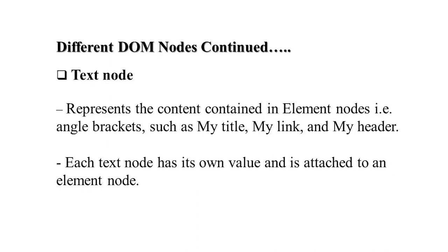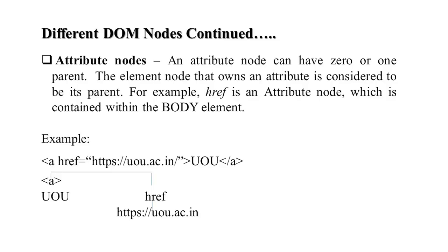Text nodes represent the content contained in an element node enclosed in angle brackets — such as 'my title', 'my link', 'my header'. Each text node has its own value and can be attached to an element node. Attribute nodes can have 0 or 1 parent. The element node that owns the attribute is considered its parent. For example, href — hyper reference — is an attribute node contained in the anchor tag, like 'a href=uou.ac.in'.